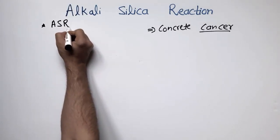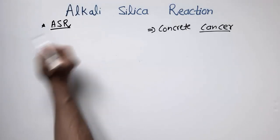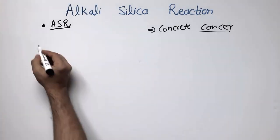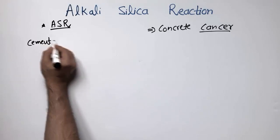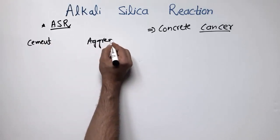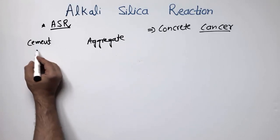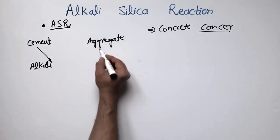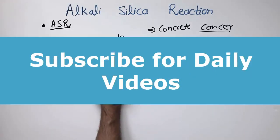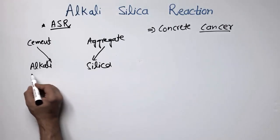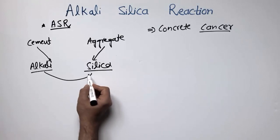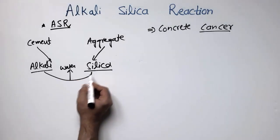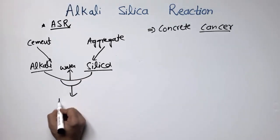In short, alkali silica reaction is represented as ASR. This reaction basically comes from two different components in concrete: one is the alkali content from the cement, and the other is amorphous silica from the aggregates. These two reactive components react with one another in the presence of water to form what is called the ASR.